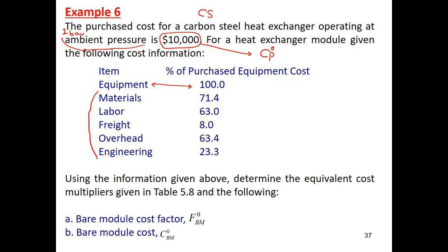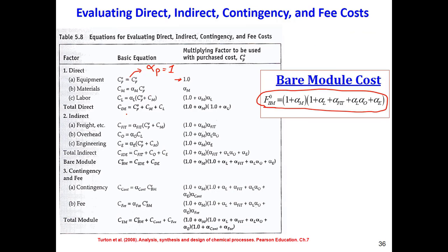So for that equipment at 100 rials: material cost is 71.4, labor is 63, freight is 8, overhead is 63.4, and engineering is 23.3. Using the information given above, determine the equipment cost multiplier given in Table 55. You need to find CB, FBM0, and CBM0.